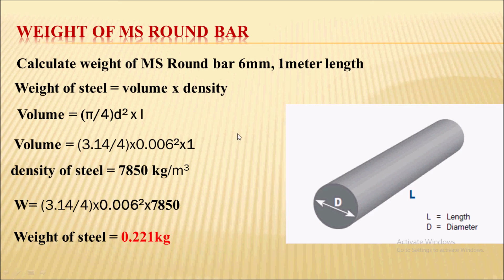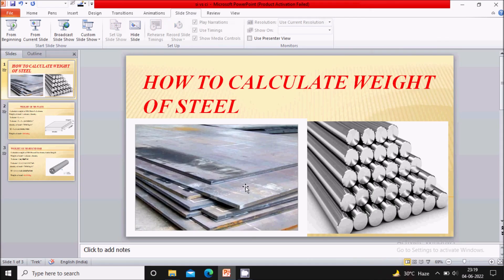This is all about how to calculate the weight of steel. The weight of steel is given by volume into density. According to the shape, the volume will change, but the density for steel remains constant at 7850 kg per meter cube. That is all in this video. Thank you for watching.